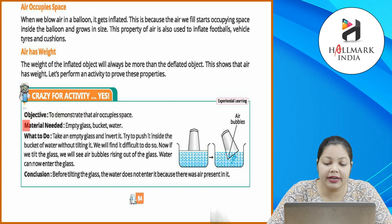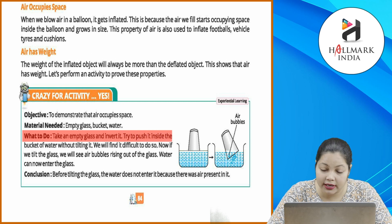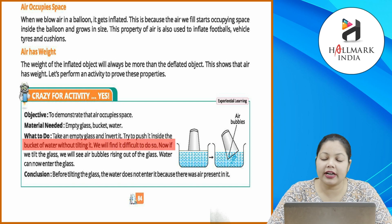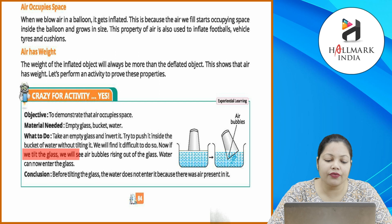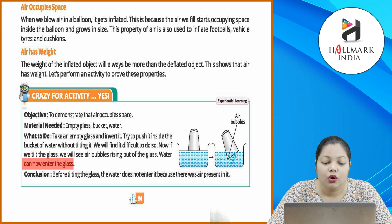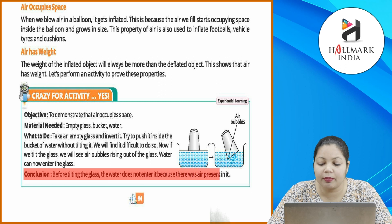Crazy for activity — objective: to demonstrate that air occupies space. Materials needed: empty glass, bucket of water. What to do: take an empty glass and invert it, try to push it inside the bucket of water without tilting it — you will find it difficult to do so. Now if you tilt the glass, you will see air bubbles rising out of the glass, and water can now enter the glass. Conclusion: before tilting the glass, water does not enter it because air was present in it.